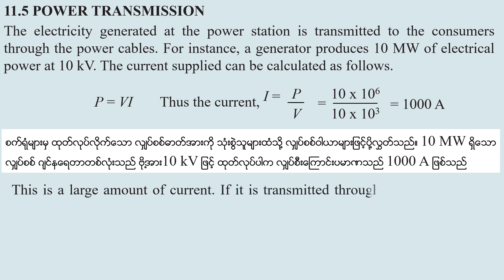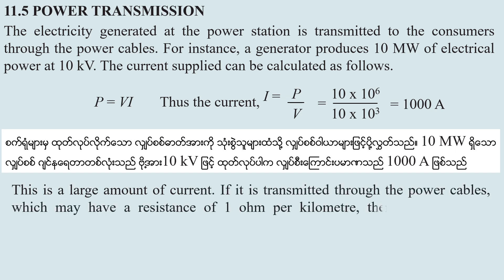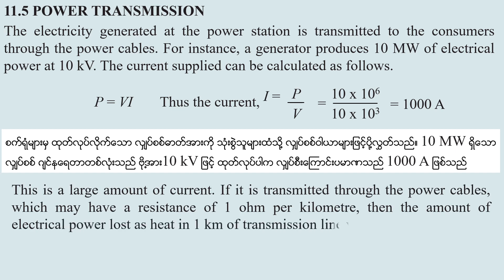This is a large amount of current. If it is transmitted through the power cables, which may have a resistance of one ohm per kilometer, then the amount of electrical power lost as heat in one kilometer of transmission line will be given by the following formula.